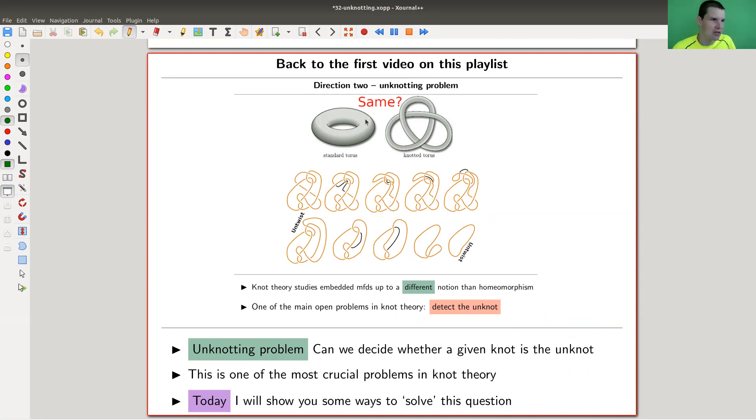It's a very simple question. A knot is just a torus, and can you tell two different embeddings of the torus apart? Obviously those two are not the same, but in general, if you have some very complicated looking knot here, there might be some really crazy moves to unknot it to an unknot.